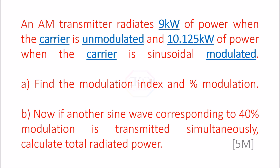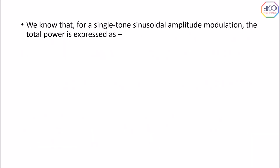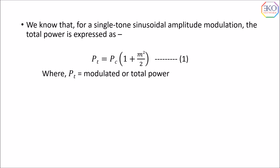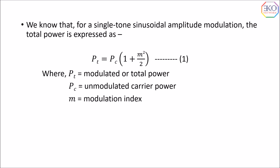For single-tone sinusoidal amplitude modulation, the total power is given as Pt = Pc × (1 + m²/2), where Pt is the modulated or total power, Pc is the unmodulated or carrier power, and m is the modulation index. Pt is 10.125 kilowatt and Pc is 9 kilowatt. From this we need to calculate the value of m using equation 1.